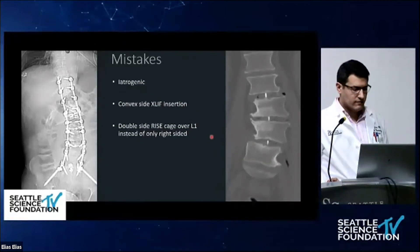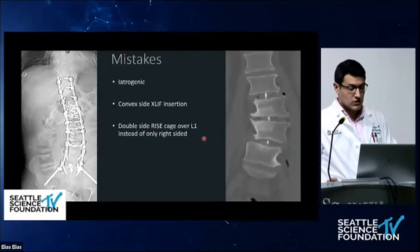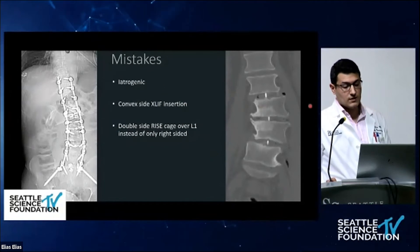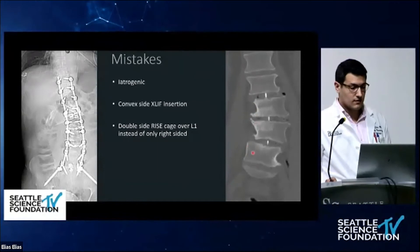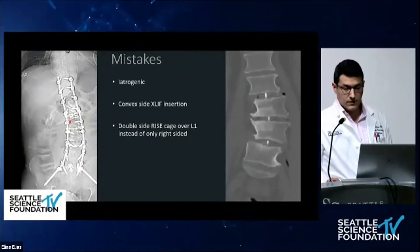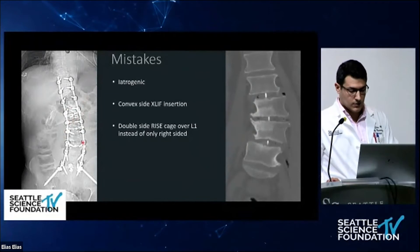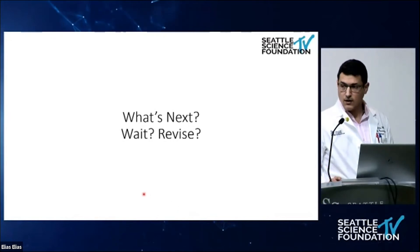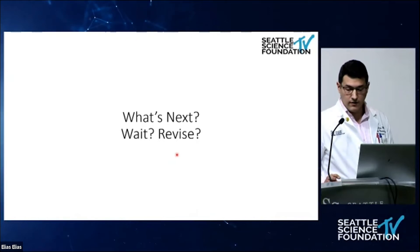Before opening for discussion, I want to mention that I think this inadequate correction was iatrogenic. One of the mistakes we made was inserting the XLIF cages from the convex side of the lumbar area instead of the concave side. Another mistake was placing bilateral RISE cages over L1-L2, instead of inserting one cage from the right — concave — side and compressing the opposite side. The question for the panelists — Dr. Dubousset, Dr. Hart, Dr. Skaff — is: what should we do next? Should we wait, should we revise? And are there other mistakes that were made?